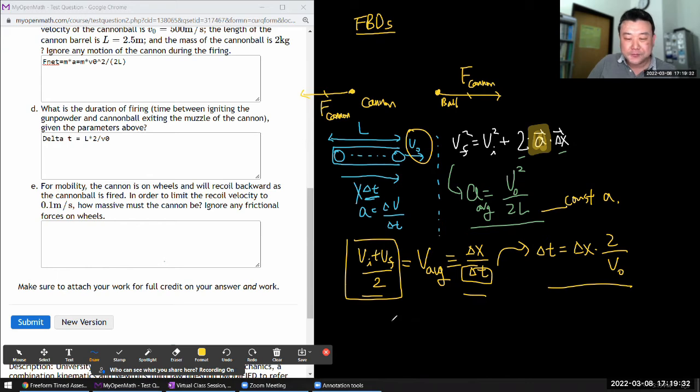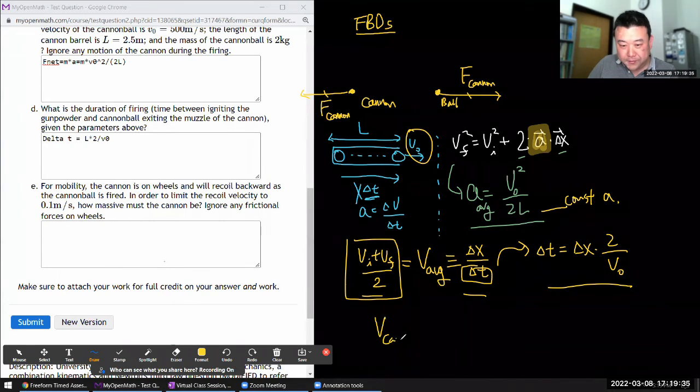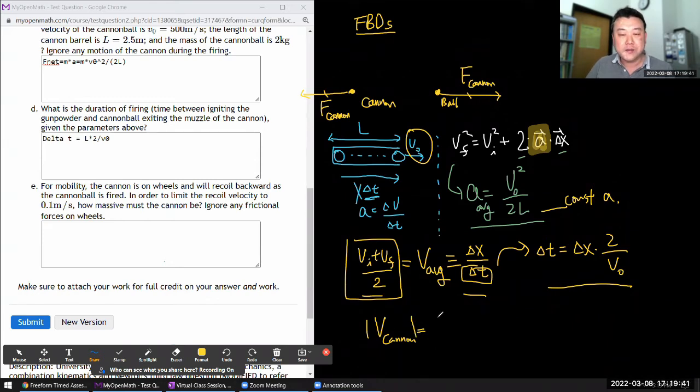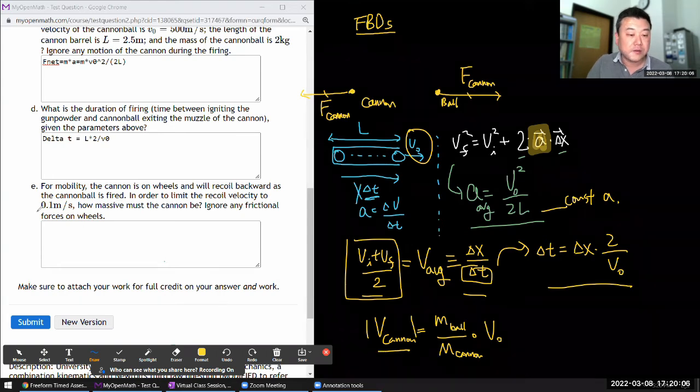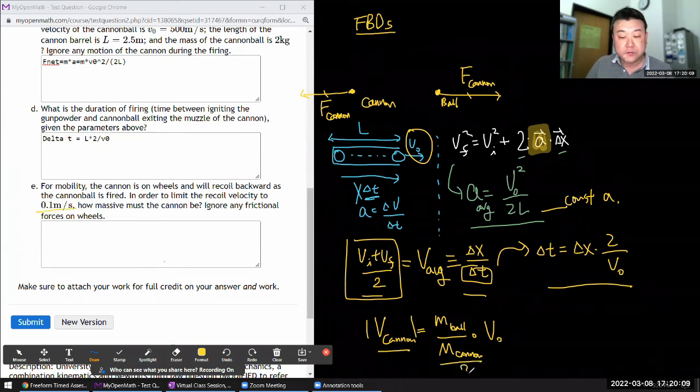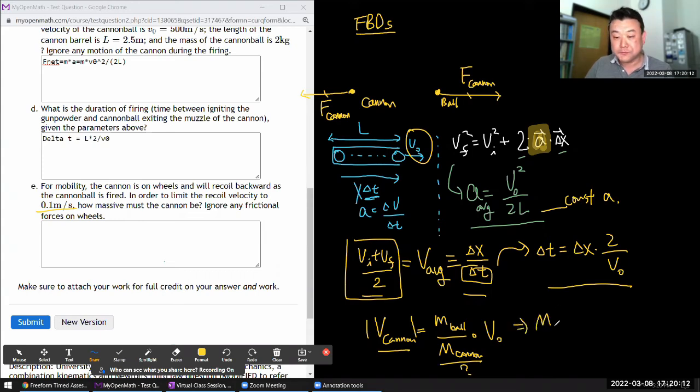Let me just say the answer. The velocity of the cannon based on conservation of momentum will be the ratio of the masses. Mass of the cannonball divided by mass of the cannon times v_naught, the speed of the cannonball as it's exiting. This is going to be the speed of the cannon. In this question they are basically giving you this quantity, they tell you how they want to limit it, and they are asking for this quantity here.